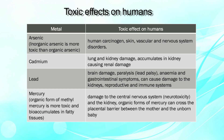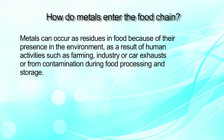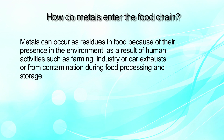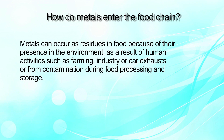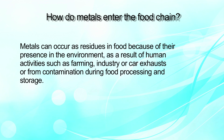Mercury — the organic form, methylmercury, is more toxic and also bioaccumulates in fatty tissues. It causes damage to the central nervous system and the kidneys, and the organic form of mercury can cross the placental barrier between the mother and the unborn baby. Metals can occur as residues in food because of their presence in the environment and as a result of human activities such as farming, industry, car exhaust, or from contamination during food processing and storage.